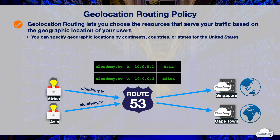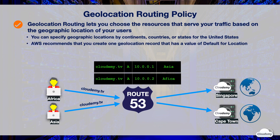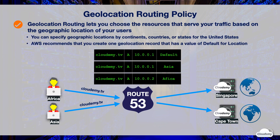If you create separate records for overlapping geographic regions — for example, one record for North America and one for Canada — the priority goes to the smallest geographic region. This allows you to route some queries for a continent to one resource, and queries for selected countries on that continent to a different resource. Geolocation routing works by mapping users' IP addresses to geographic locations. However, not all users' IP addresses can be recognized, so even if you create geolocation records that cover all seven continents, Route 53 might receive some DNS queries that cannot be recognized. AWS recommends that you create a geolocation record with a default value that covers geographic locations which you haven't created records for, and IP addresses that Route 53 cannot recognize. If you don't have a default record, Route 53 returns a no-answer response for requests from those locations.